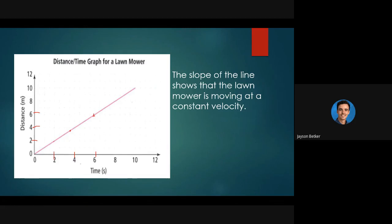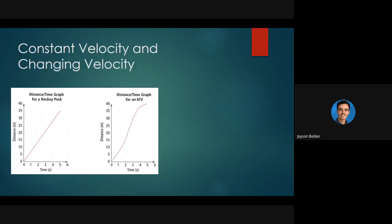That means that if I'm going two meters every two seconds, I'm going one meter per second. Now, what happens if we have some graphs that look a little bit different?